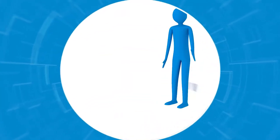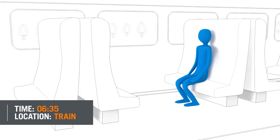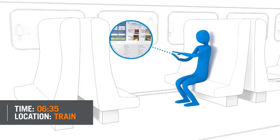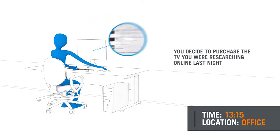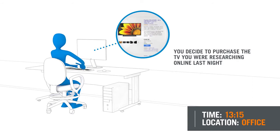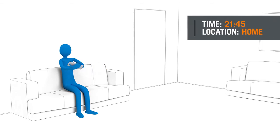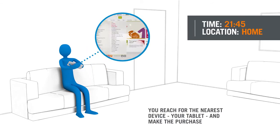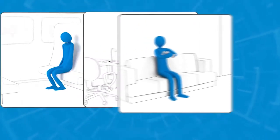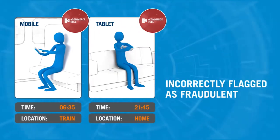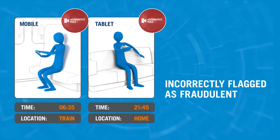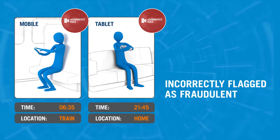Certainly. Imagine this scenario. You're on your way to work and you remember that you need to buy some important travel tickets. You get out your smartphone and make the purchase there and then so that you don't forget. You go to work, log into your PC and during the day decide to purchase the TV that you were researching online last night. You later go home and that evening decide to order the food shopping for the next week. You reach for the nearest device, which happens to be your tablet on the sofa, and make the purchase. Traditional e-commerce fraud rules might regard the orders made on the mobile or the tablet as risky, just because they're being placed outside of normal times for e-commerce activity. But in the mobile channel, this is perfectly normal behaviour.